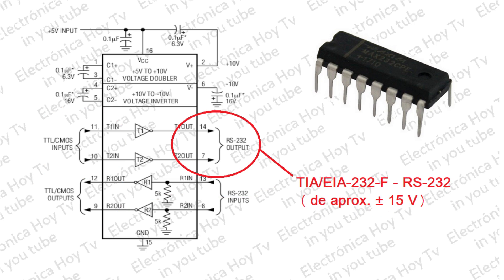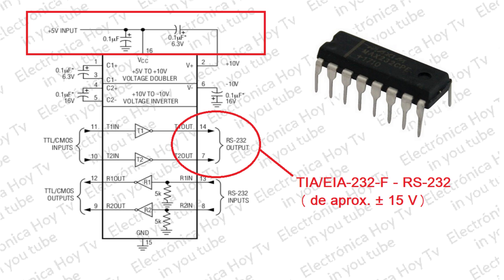El circuito integrado tiene salidas para manejar los niveles de voltaje para el protocolo TIA-EIA-232F del RS-232 de aproximadamente más menos 15 voltios, y niveles de tensión que produce a partir de un solo voltaje de alimentación de más 5 voltios, utilizando multiplicadores de voltaje, también llamados bombas de carga, internamente en el MAX-232.